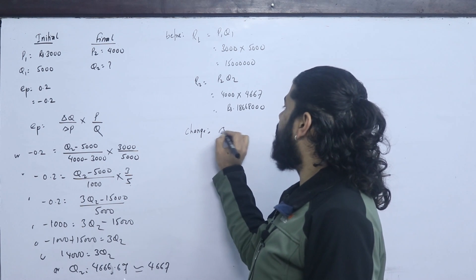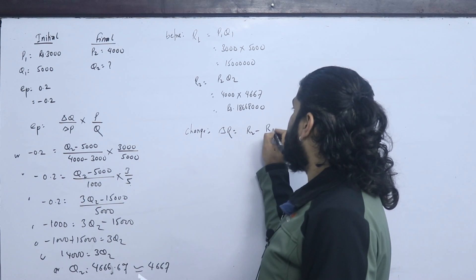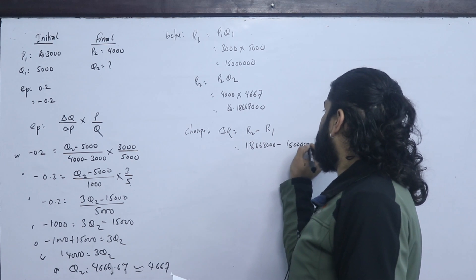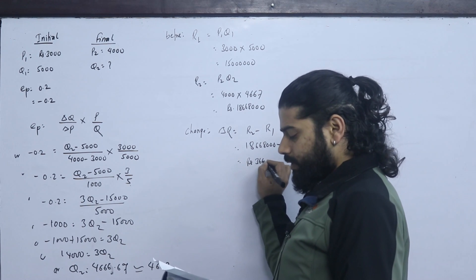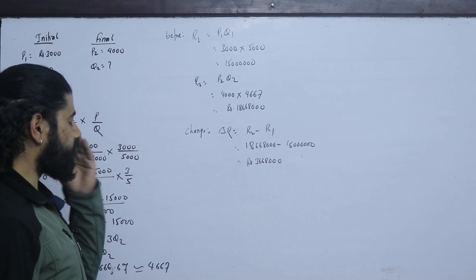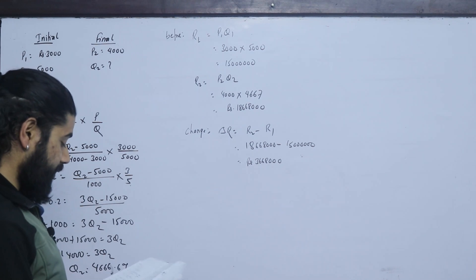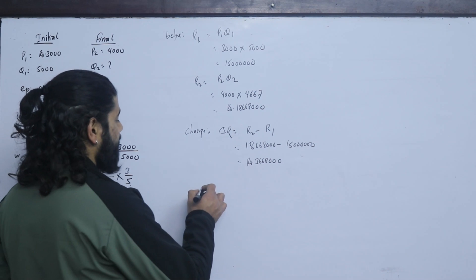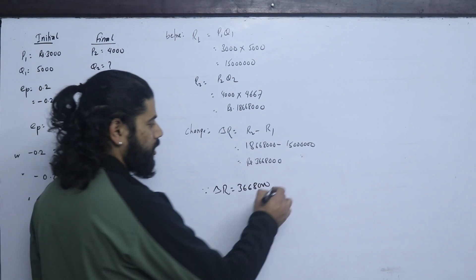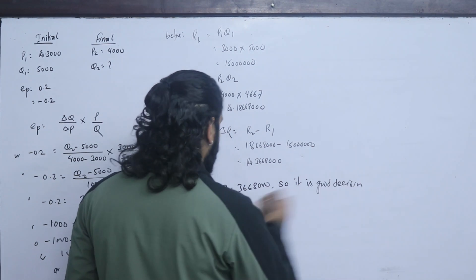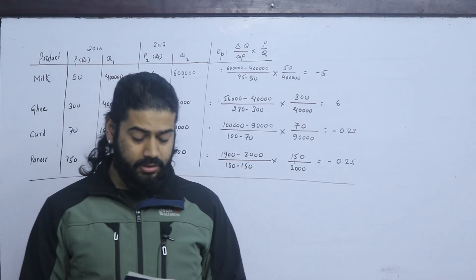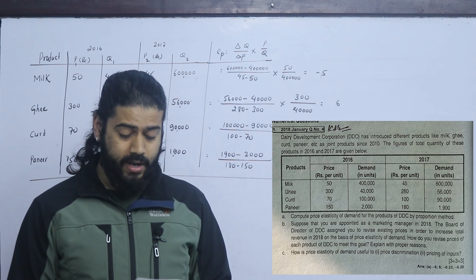Delta R = R2 − R1 = 18,668,000 − 15,00,000 = 3,168,000. Since delta R is positive, this is a good decision to increase the price. The total revenue increases after raising tuition fees.